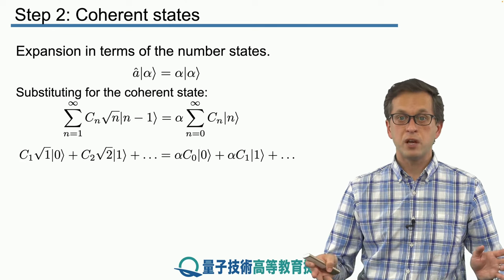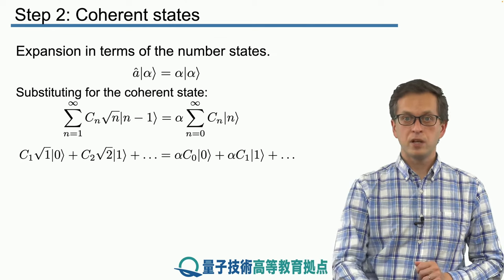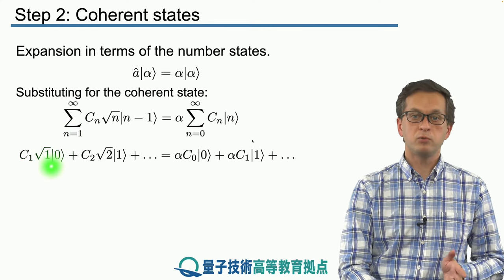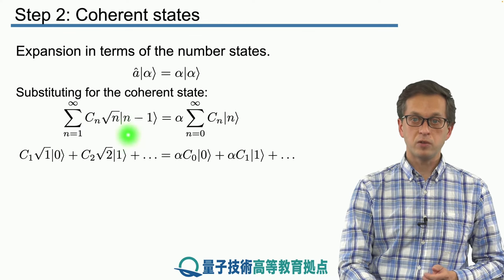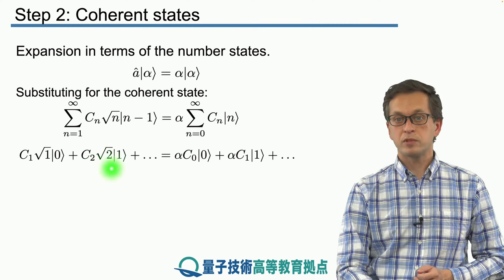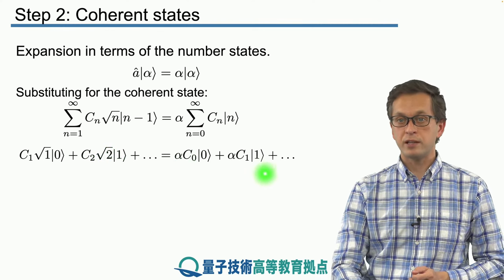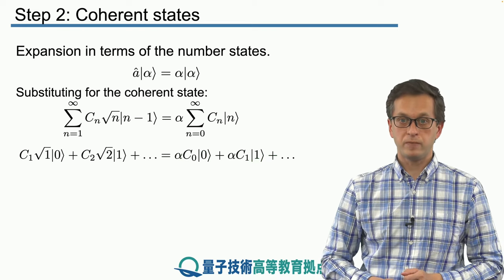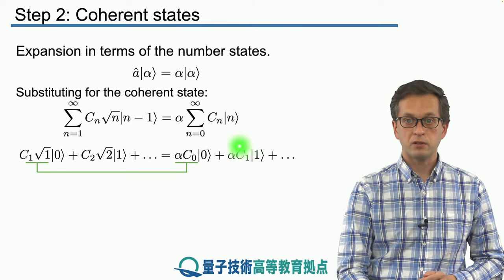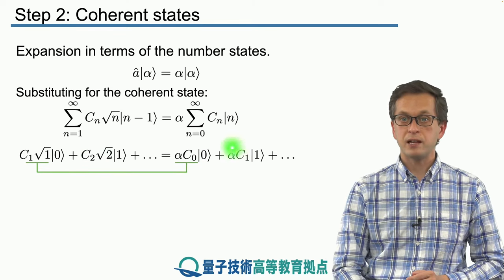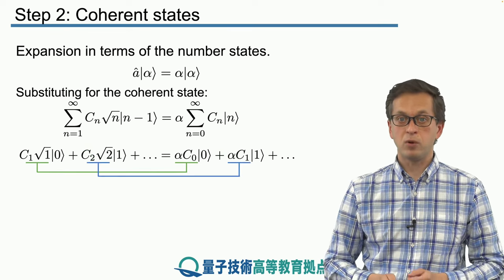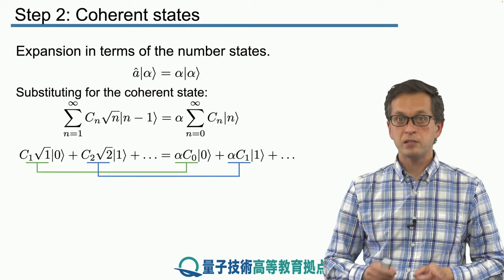Now what we can do is we can just write out the sum to see more clearly what's happening. So for the first term, when n equals 1, we've got C1 times square root of 1, which is just 1, times the vacuum. Because here we have 1 minus 1. Plus the second term, C2 times square root of 2 times ket 1 and so on. And similarly on the right hand side, we've got the following expansion. Now in order for both sides to be equal, we must have that the coefficient for 0 on the left hand side and the right hand side are also equal. Similarly, the coefficient in front of ket 1 must be equal on the left hand side and on the right hand side. And this must be true for any n.